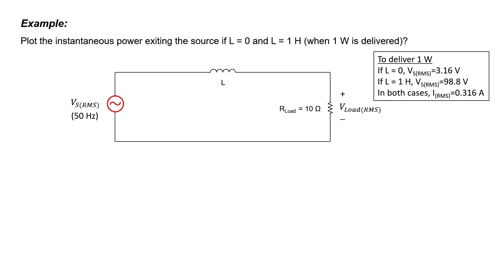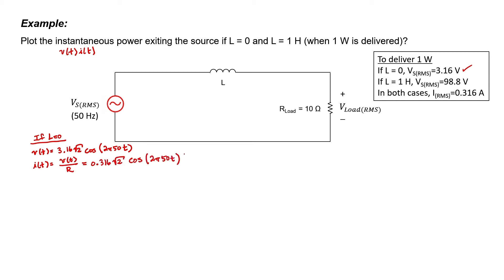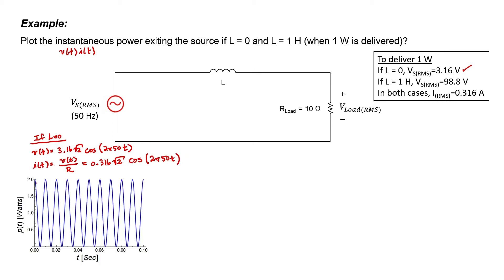I'll show you what happens in the time domain. Let's plot the instantaneous power — V times I — coming out of the source for the two situations: zero inductance and 1 Henry inductance along the line. If the inductance is zero, I'll use cosine as my phase reference. Current is just V divided by R, and if I multiply voltage times current in the time domain, I end up with a cosine squared. Sometimes the power flowing from the source reaches two watts, and sometimes it drops down to zero watts. The average power flowing from the source is one watt. The apparent power is related to this amplitude — this curve is one watt high, so we have plus or minus one volt amp.